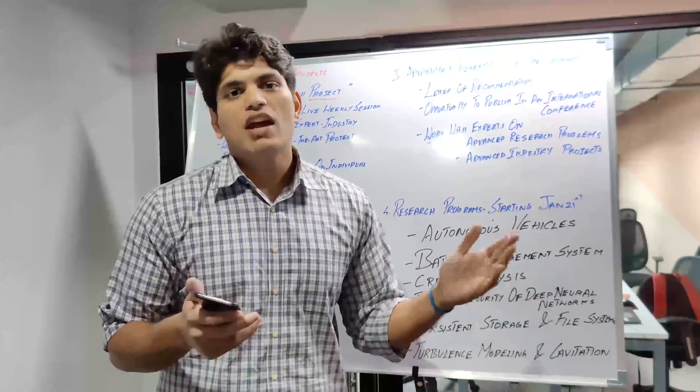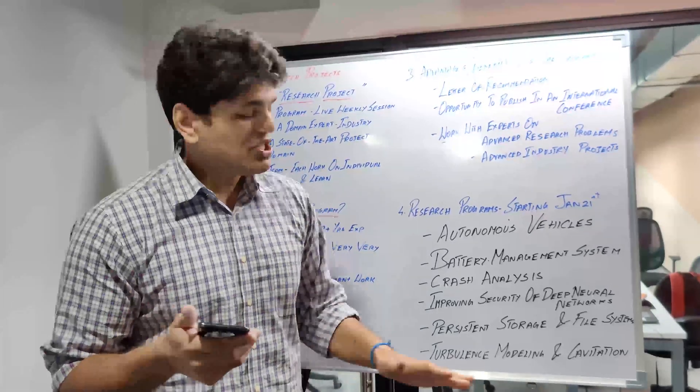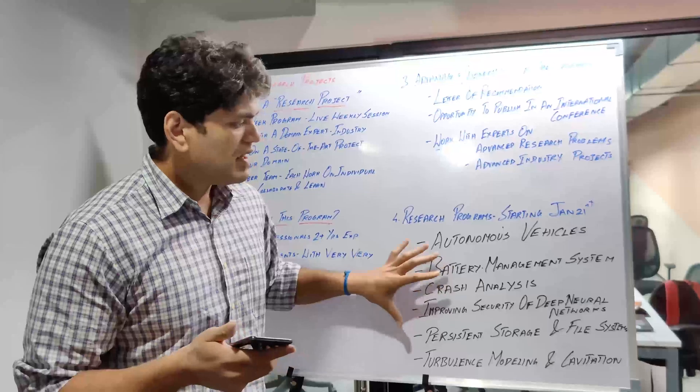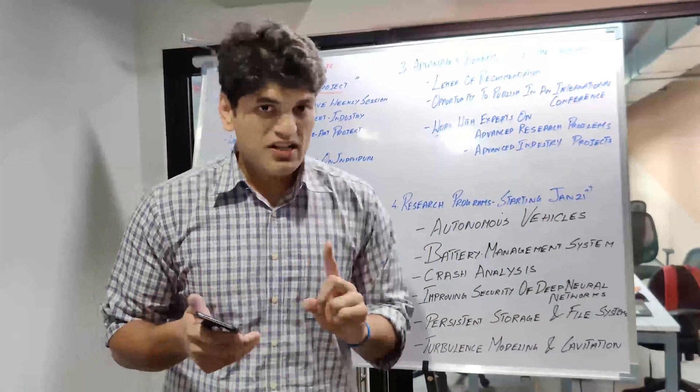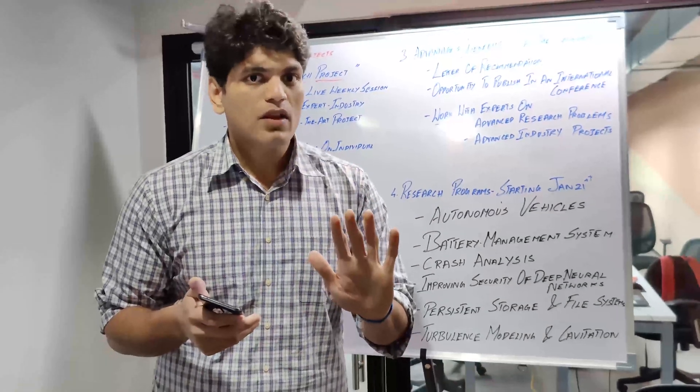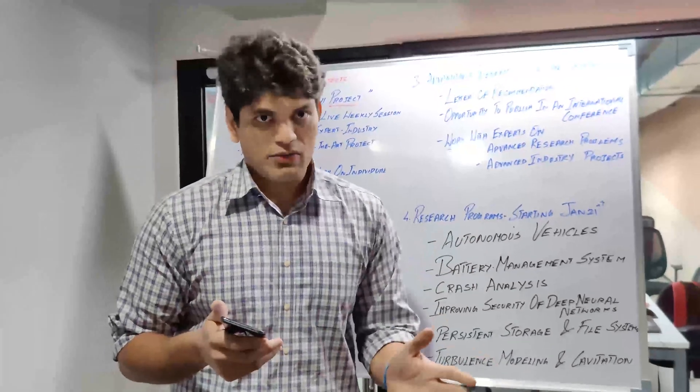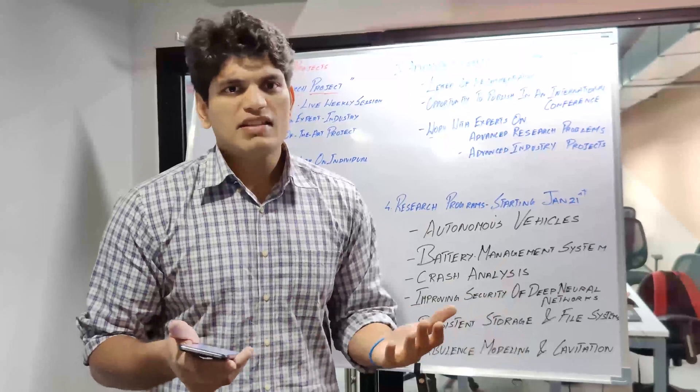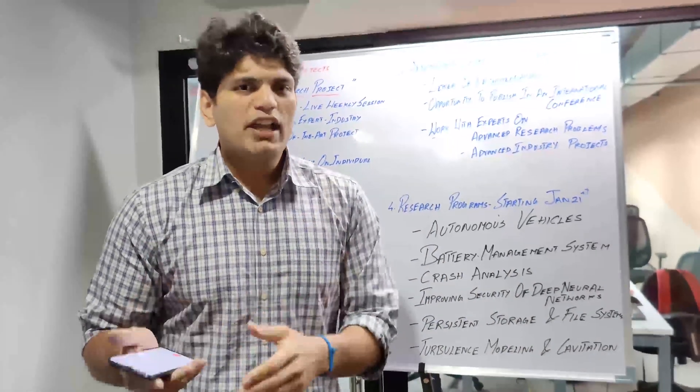Turbulence modeling and cavitation: again, this is for mechanical, automotive, and aerospace engineers. If you want to work on turbulence modeling and cavitation, there are some very interesting projects. These are the six projects that are available. The batch starts on February 1st and every project will have only five students, not more than that. Each project is 175,000 rupees to enroll in one of these research projects. You just need to pay 175,000 rupees over three installments.